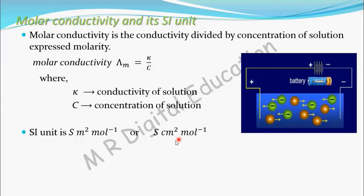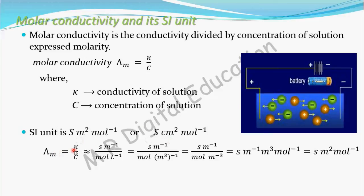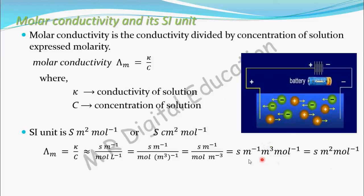The unit of lambda m equals conductivity divided by molar concentration. The unit of conductivity is siemen per meter and molarity is mol per liter, but we convert liter into per meter cube. So siemen per meter divided by mol per meter cube — taking meter cube up and mol down — gives siemen times meter squared per mol. The unit of molar conductivity is siemen meter square per mol.